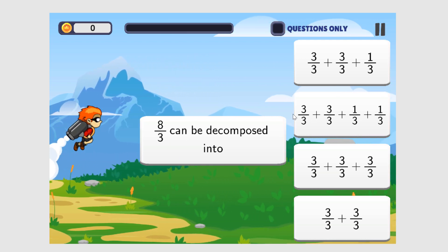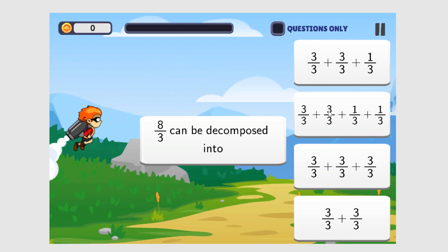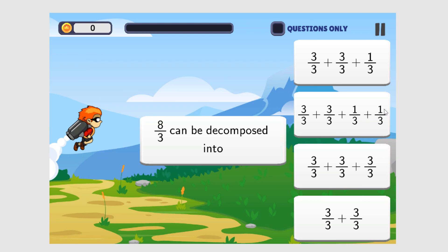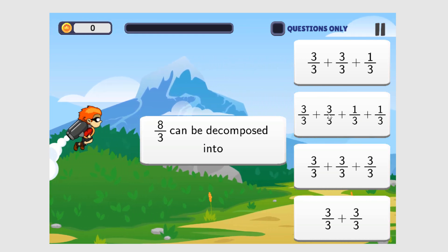That's not eight-thirds. Here we have three plus three is six, plus one is seven, plus one is eight. Eight-thirds. So this is correct.